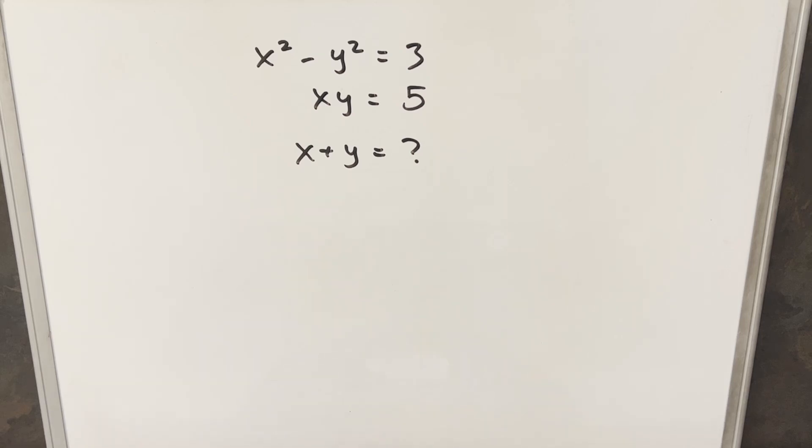Hey, we have here today an algebra problem. We've got a little system of equations. We're given that x squared minus y squared equals 3, x times y equals 5, and we're asked to solve for x plus y.